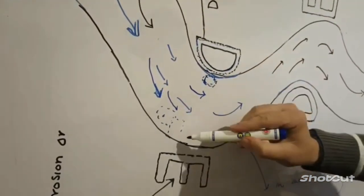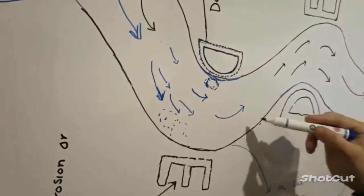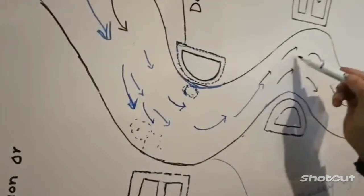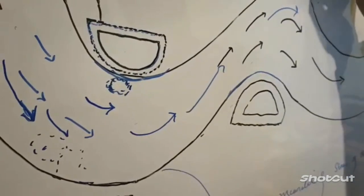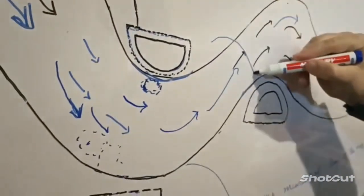So silting and deposition will occur here and scouring will take place here. So again when it comes to this point here, if its shape is like this, then this E will be shifted to this point here and this D will shift to this point here.